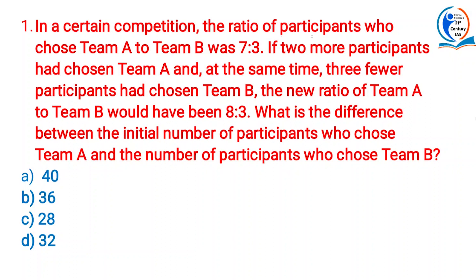In a certain competition, the ratio of the participants who chose team A to team B was 70 to 3. If two more participants had chosen team A and at the same time three fewer participants had chosen team B, the new ratio of team A to team B would have been 80 to 3. What is the difference between the initial number of participants who chose team A and the number of participants who chose team B?